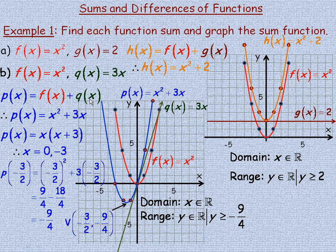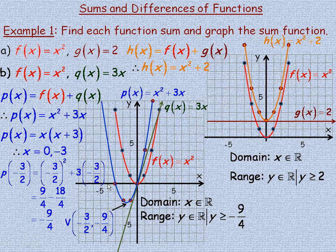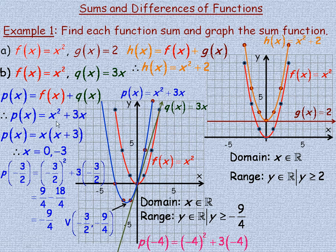If it says f of x minus q of x, you take f's y values and subtract q's from them; if q of x minus f of x, you take q's first and subtract f's. To find an additional point, for example at x equals negative 4: p of negative 4 is negative 4 squared plus 3 times negative 4, which is 16 minus 12, equaling 4. So the point negative 4, 4 is on the graph.